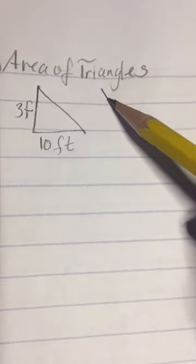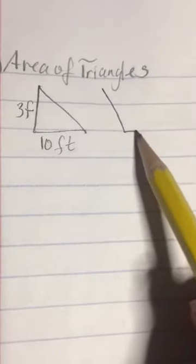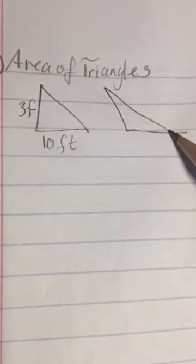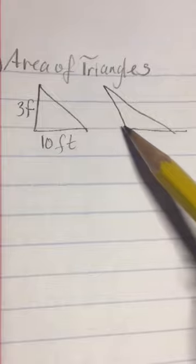I also could have chosen a triangle that looks like this. Okay, and this is called an obtuse triangle because this angle is more than 90 degrees.